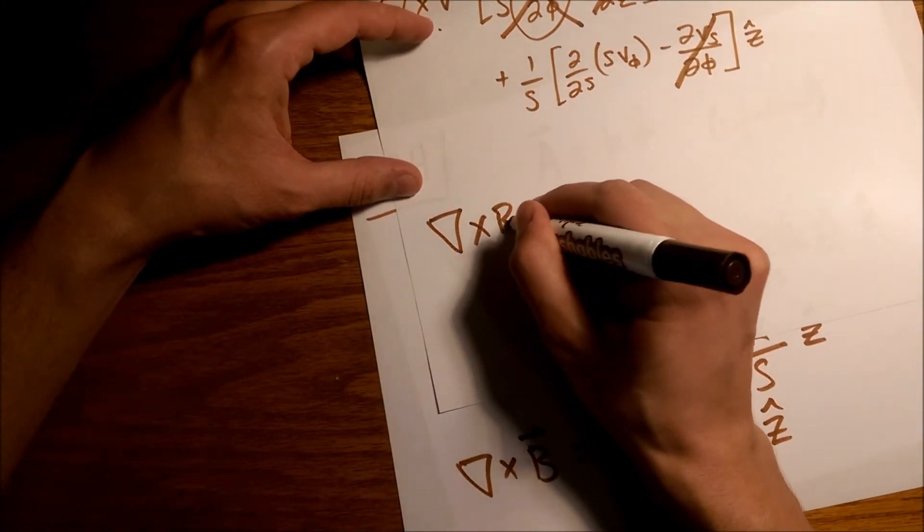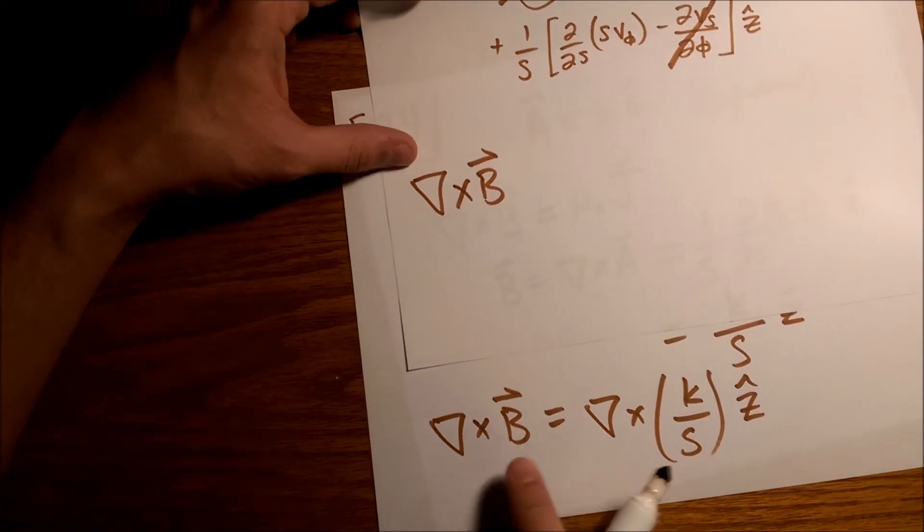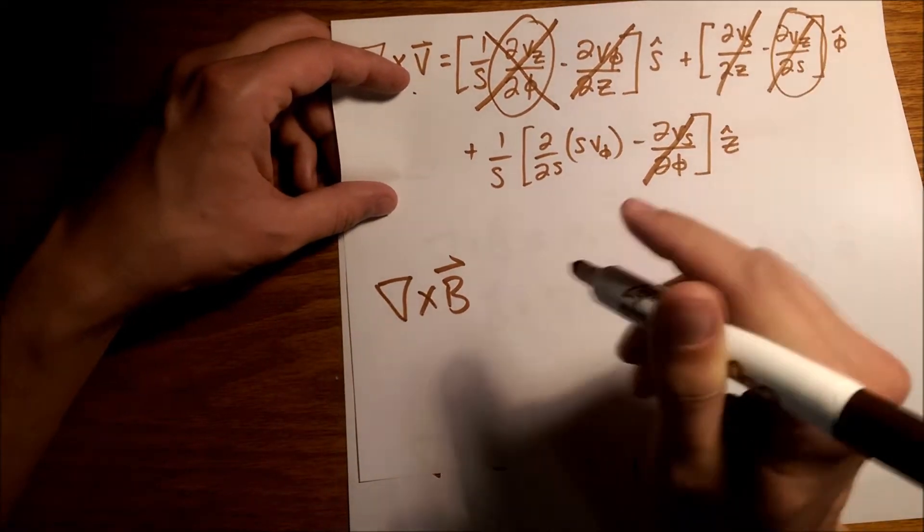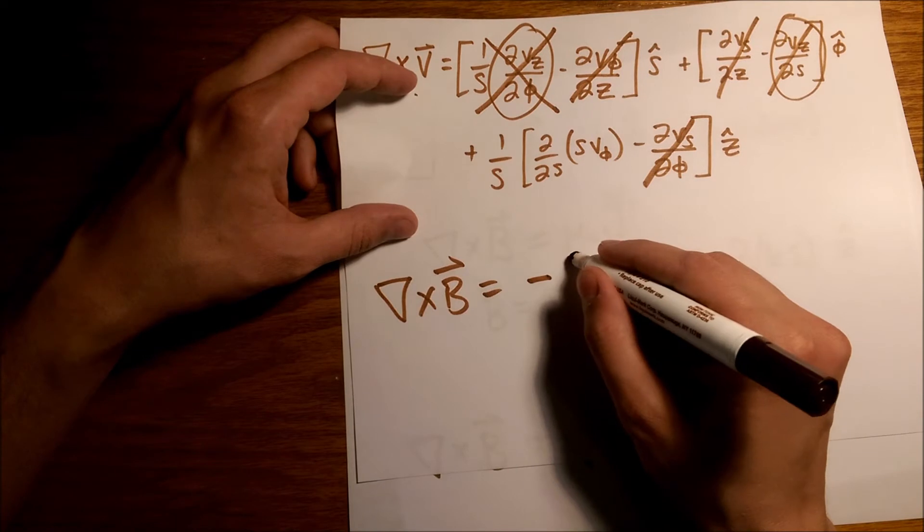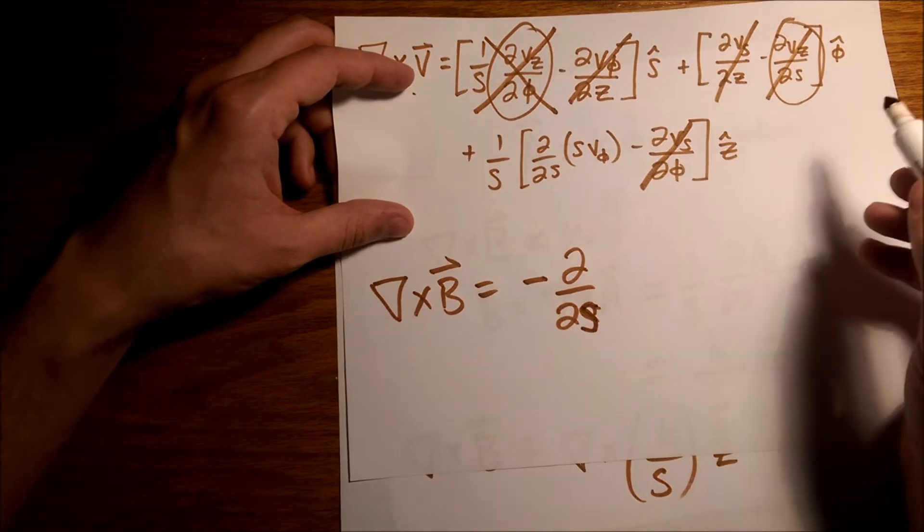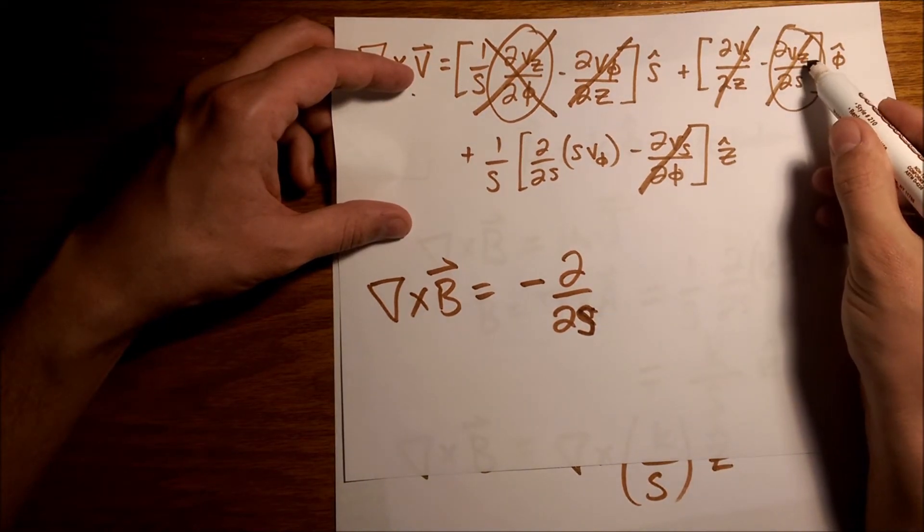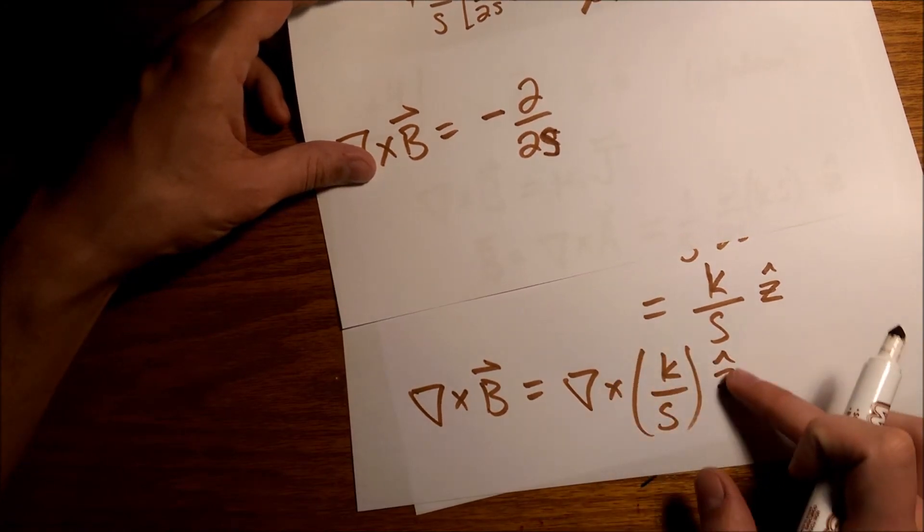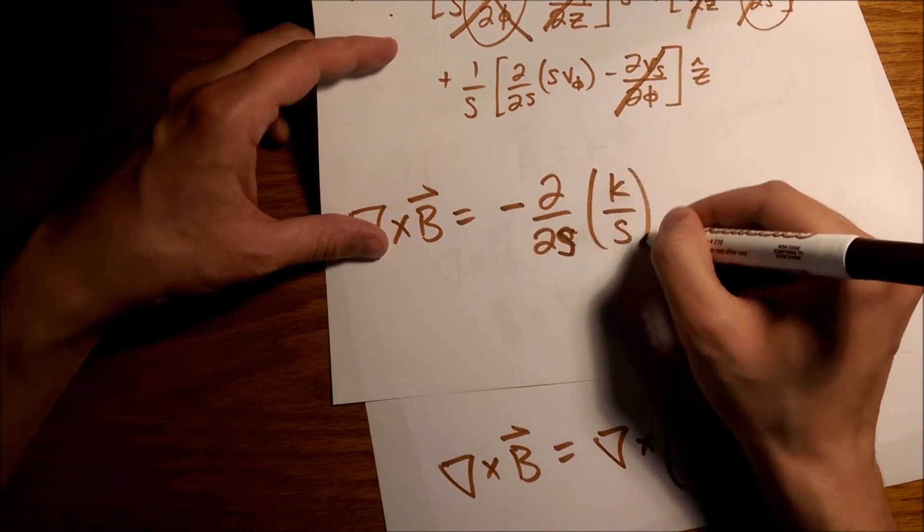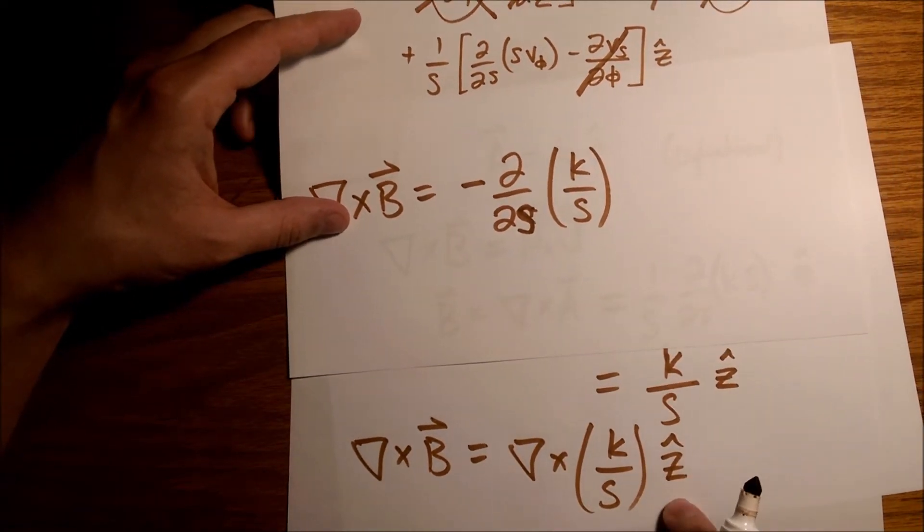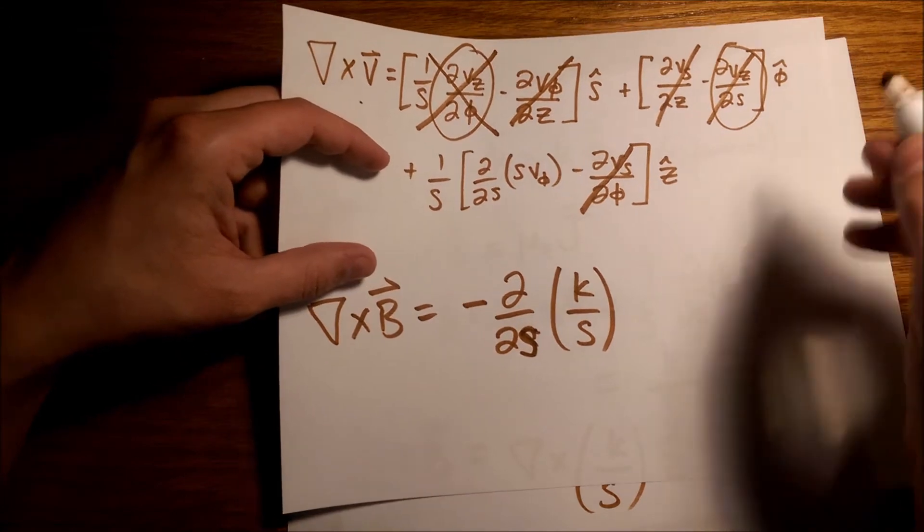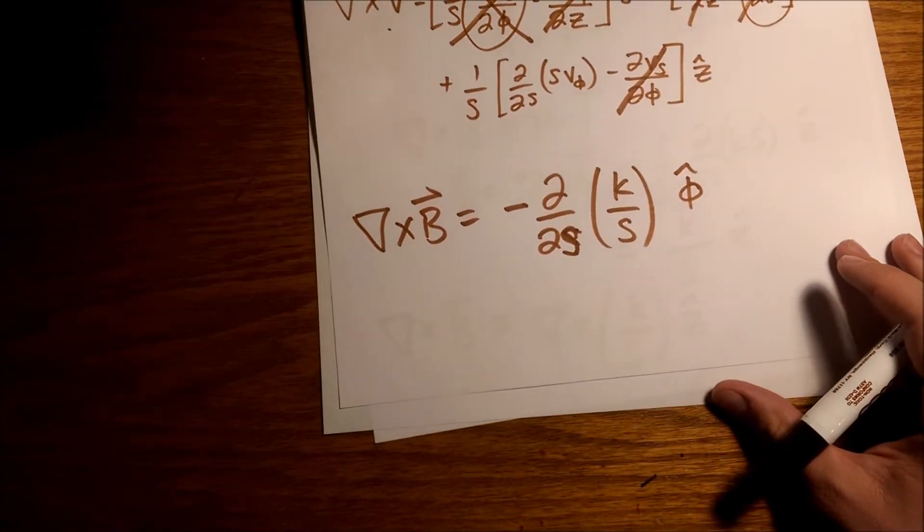Okay, so let me come over to a new sheet and let's write this. Again, this is what we are going for here, and we are just keeping this term, this term right here. So there's this minus sign right here, minus sign, d by ds, oh boy, s, this is an s, of vz, which is this part right here, so k over s, that's the v sub z, the z component part, and then this is multiplied by the phi hat unit vector now.